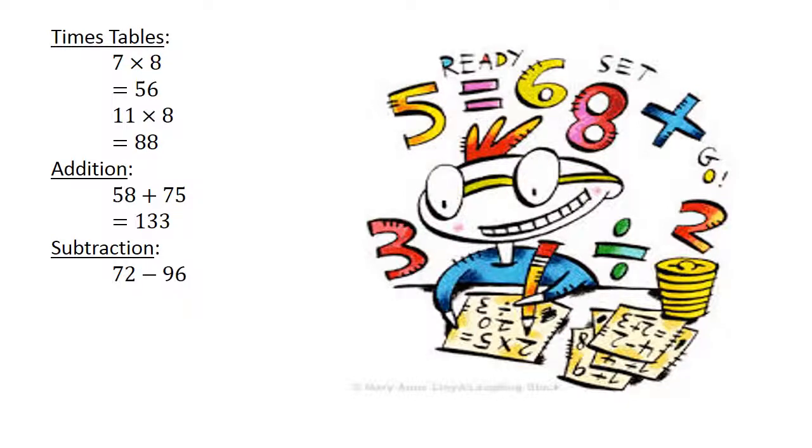Subtraction. 72 minus 96 equals negative 24.